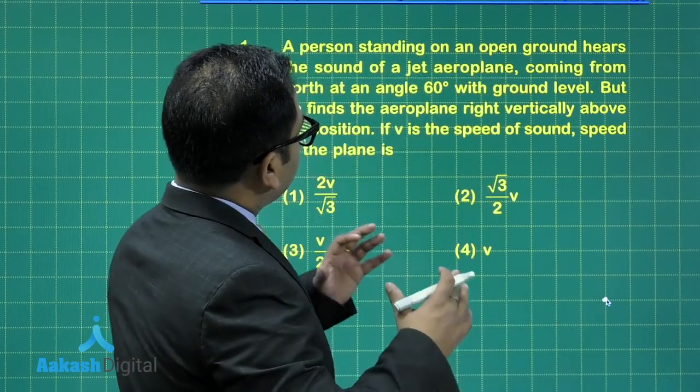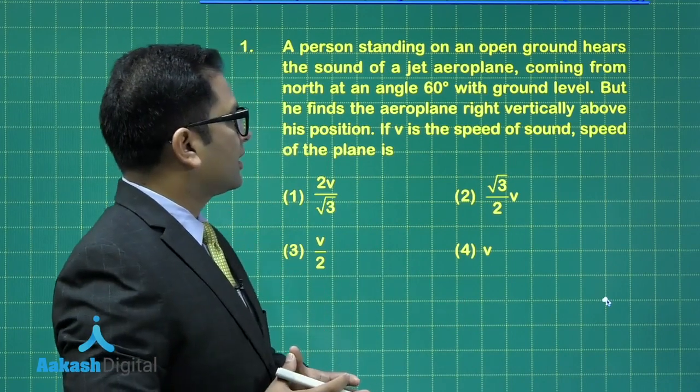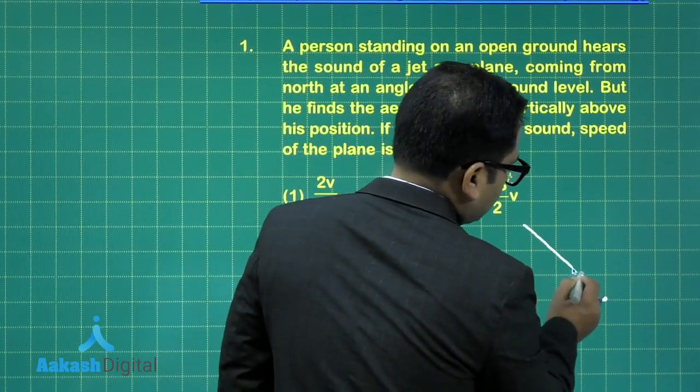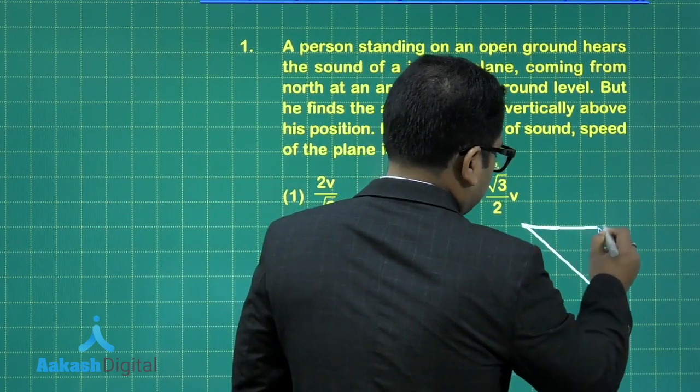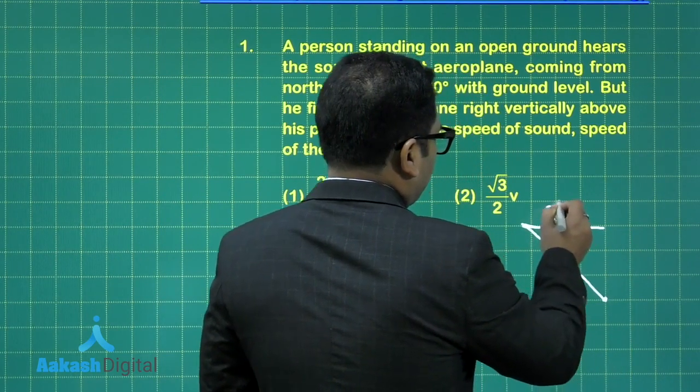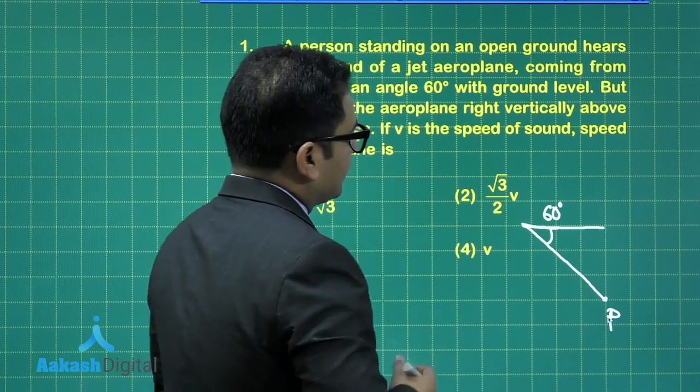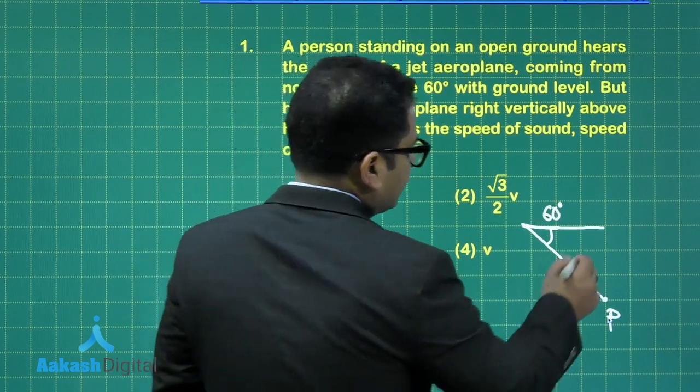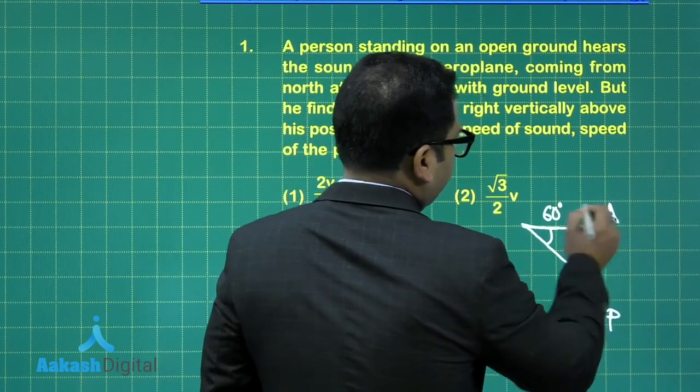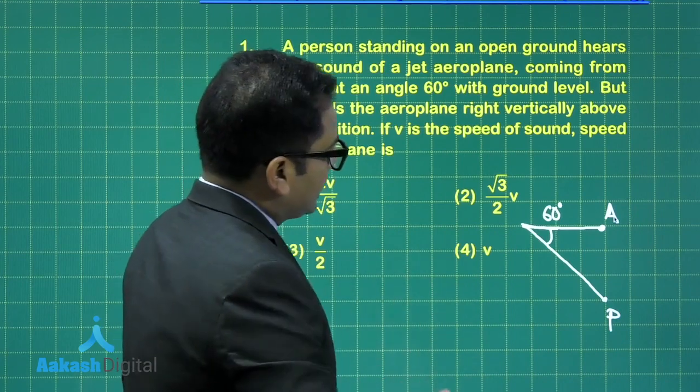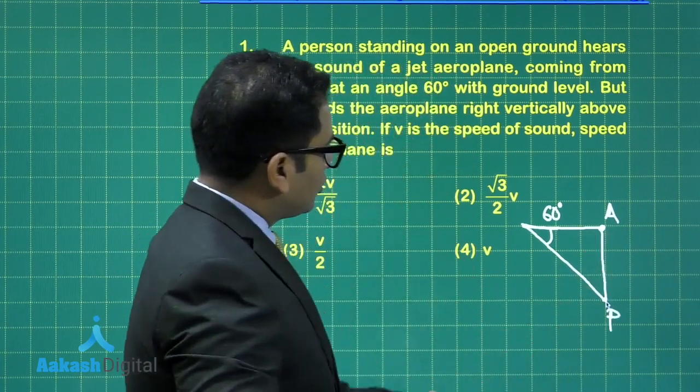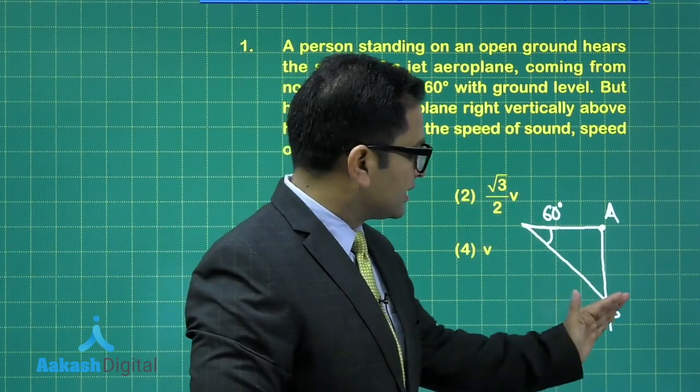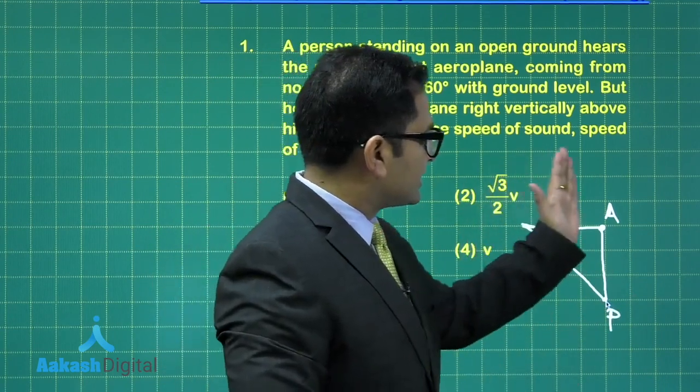You see, the person is here. The person hears the sound of a jet airplane coming from north at an angle of 60 degrees with the ground. If I set this point to be north, so here this angle is 60 degrees. The person hears that the sound is coming from this direction, while the person finds that the airplane is there vertically up. So what has essentially happened? The sound which was released by the jet airplane at this point, when it reached the person, meanwhile the jet plane has exactly reached here.